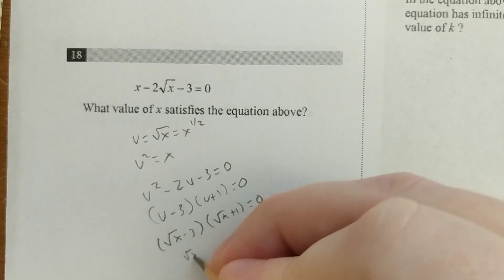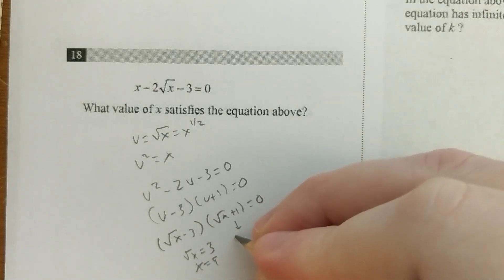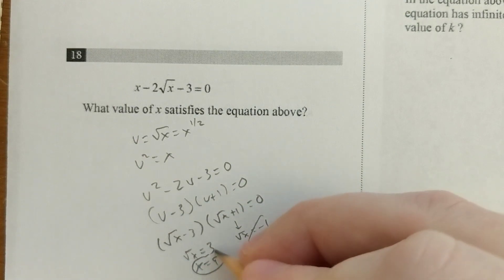For this one, you'll get the square root of x equals 3, which means x equals 9. For this one, you'll get the square root of x equals negative 1. And that's not going to work, so the answer is 9.